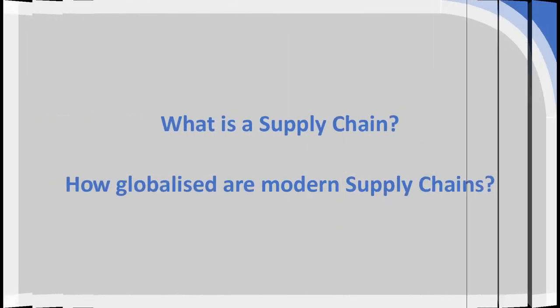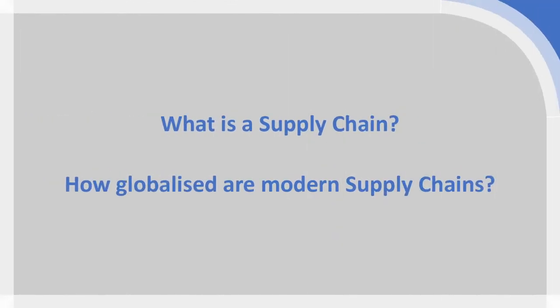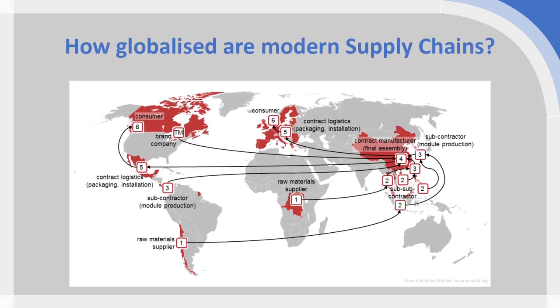That's our understanding of what a supply chain is exactly. But in terms of how globalized modern supply chains are, the answer is massively globalized. If we consider a typical electronics product supply chain, this fits a huge range of mobile phones, smartphones, watches, laptops, and computers.